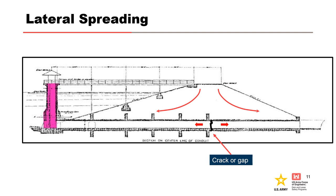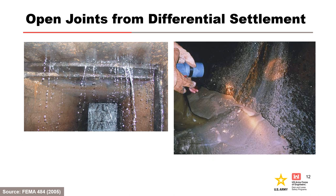Defects in conduits can be caused by embankment settlement, which can lead to lateral spreading and subsequent opening of joints. Differential settlement can also cause joints to open. On the left, we can see water seeping through a joint in an outlet works conduit. The joint has experienced differential settlement, has no longitudinal reinforcement extending across the joint, and the mortar joint filling had cracked and deteriorated over time. On the right, we have an example of soil particles being carried into an outlet works conduit through a joint.